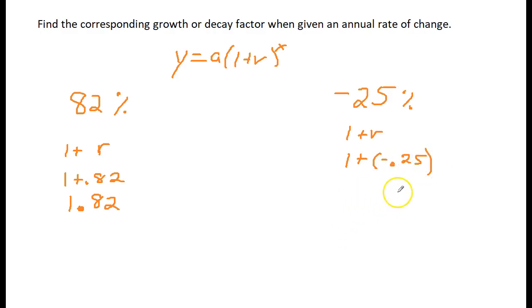Well, 1 plus negative 0.25 gives me 0.75. All right, this one is less than 1. So this one's going to be decay.